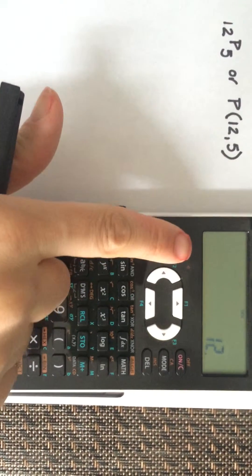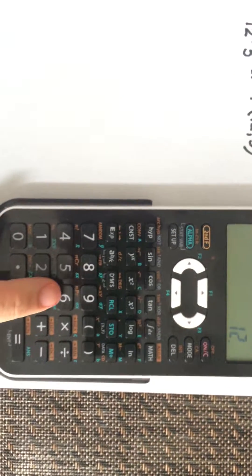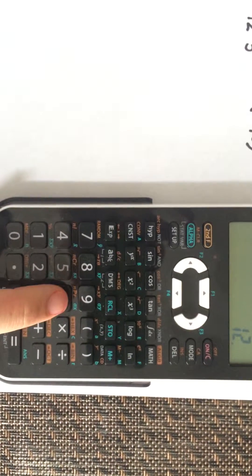Then you're going to hit the second function, the orange key. Then on top of the 6, you're going to see NPR, so you're going to select 6.